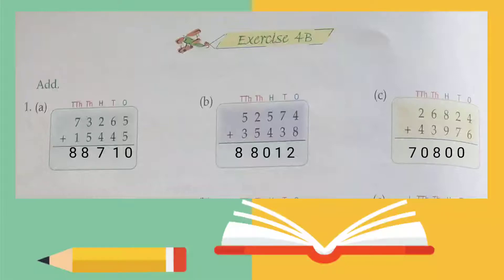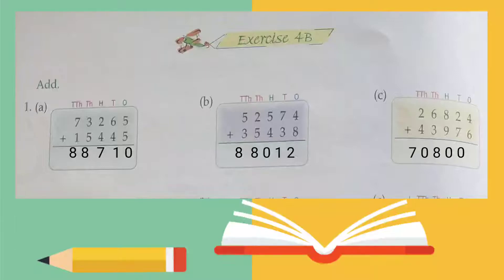Moving on to part C: we have 26,824 added to 43,976. Again, we start from the right-hand side. Four plus six is ten — one carry. Seven plus two is nine, plus one is ten — one carry. Then eight plus nine is seventeen, plus one is eighteen — one carry. Six plus three is nine, plus one is ten — one carry. Two plus four is six, plus one is seven.